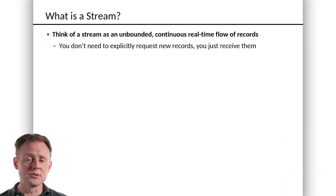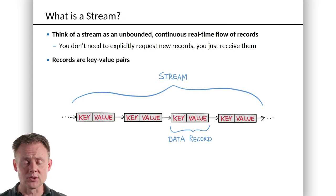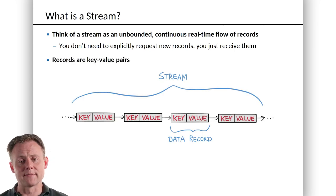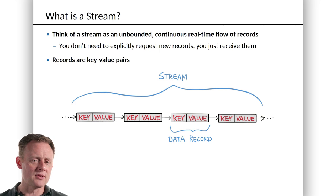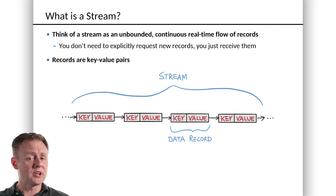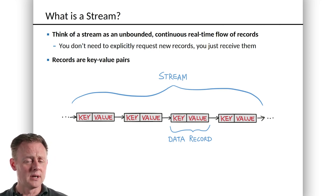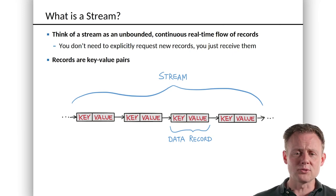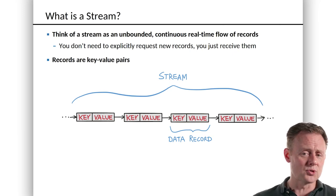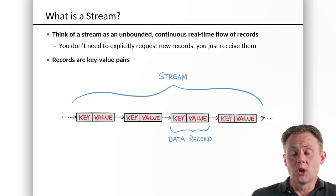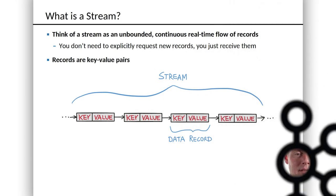Those records themselves are structured as key-value pairs. As you may know, inside Kafka those are untyped byte arrays — they can be whatever you want. But from the standpoint of the API that we're going to look at, those are very much typed things. So you might have a stream whose key is a string and the value is a long, maybe a count of something like that. There is a type system that helps us keep our messages straight.